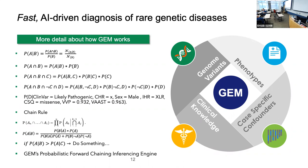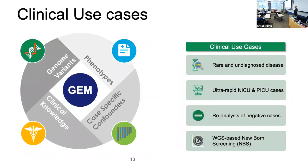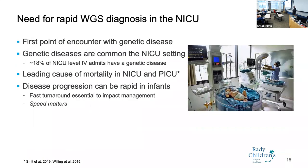There are multiple potential deployment areas for a tool like this, but today we focus on the NICU. Children with genetic diseases tend to end up in the NICU because they're sick — that's the place to detect and treat these conditions. Current estimates suggest that at a level-four NICU, about 18% of patients at any moment are there because of a genetic disease. Genetic disease is the leading cause of mortality in NICUs.